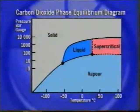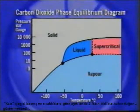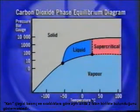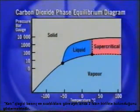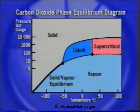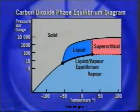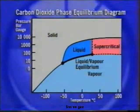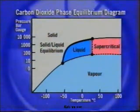The solid lines indicate the pressures and corresponding temperatures under which two different phases can exist in equilibrium — for example, solid and vapour, liquid and vapour, and also solid and liquid.